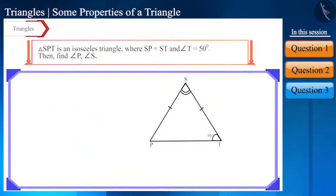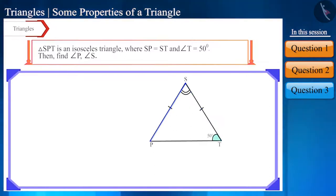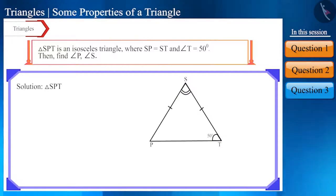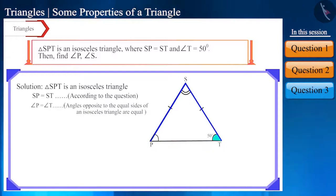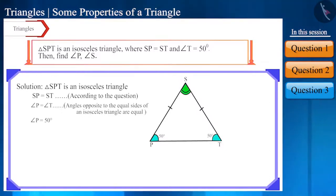Let's move to the next question. In the given figure, triangle SPT is an isosceles triangle in which side SP is equal to ST and the measure of angle T is 50 degrees. Then find the values of angle P and angle S. It's given that triangle SPT is an isosceles triangle and side SP is equal to side ST. Therefore, angle P will be equal to angle T, because angles opposite to equal sides of an isosceles triangle are equal. Since angle T is 50 degrees, angle P will also be equal to 50 degrees. And we know that the sum of the three angles of a triangle is 180 degrees.